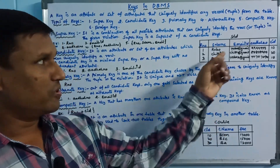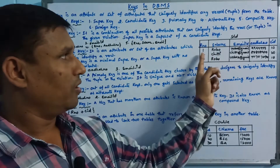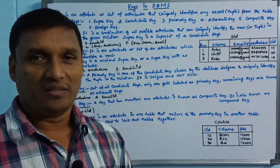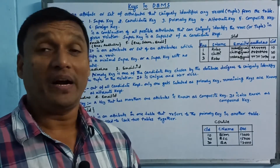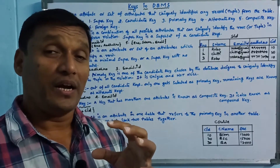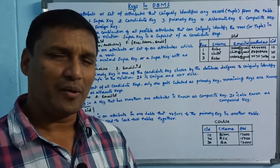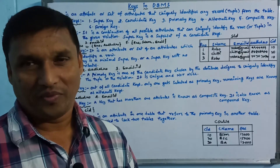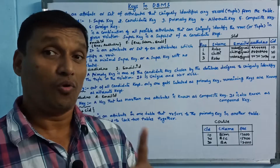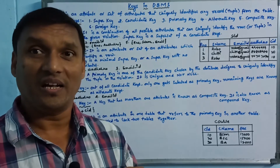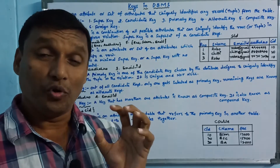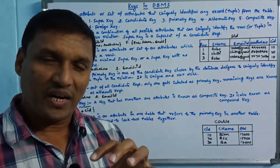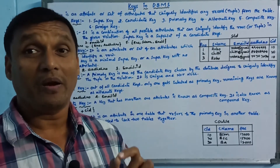For example, there is a student table with columns: rule number, student name, email ID, Aadhar card, and course ID. This data is used to maintain a unique identifier and avoid duplicate records inside the table. The column key is designed to be a unique identifier.